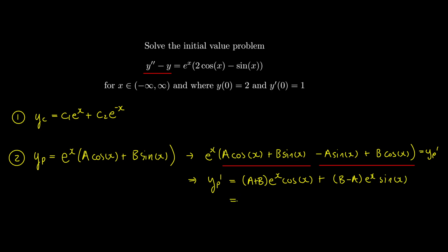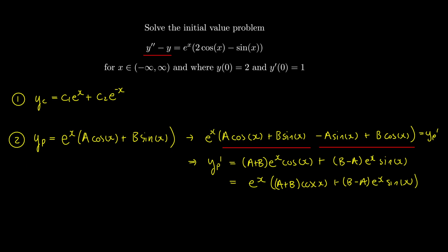Applying the same product-rule technique to differentiate yp' gives the second derivative: yp'' = 2b·e^x·cos x - 2a·e^x·sin x.